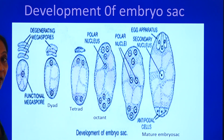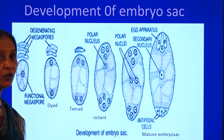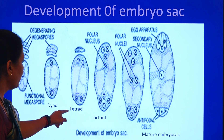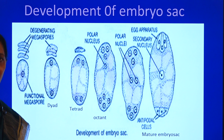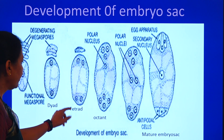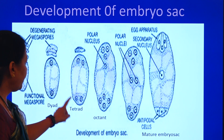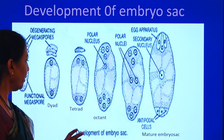The same nuclei undergo another mitotic division, resulting in the formation of four nuclei. That is referred to as the four-nucleate stage, also called the tetrad stage.